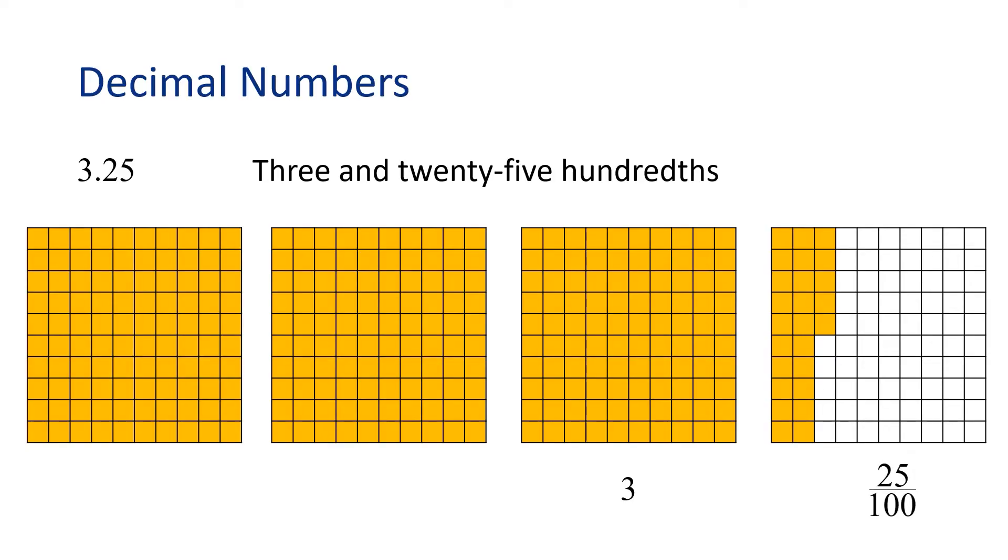Notice how each whole is comprised of a 10 by 10 grid which has 100 squares. The last grid has 25 out of 100 squares shaded. This set of figures represents 3 and 25 hundredths.